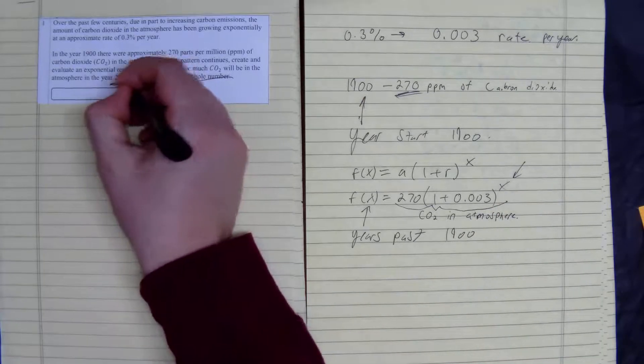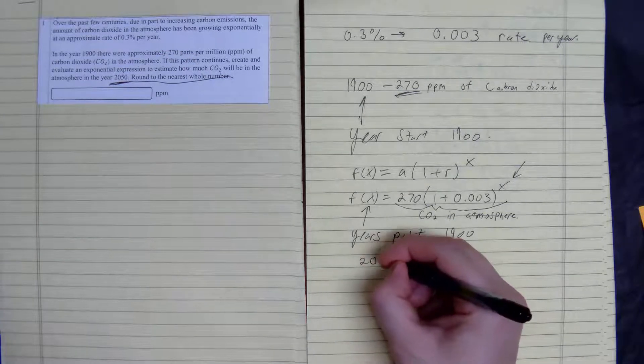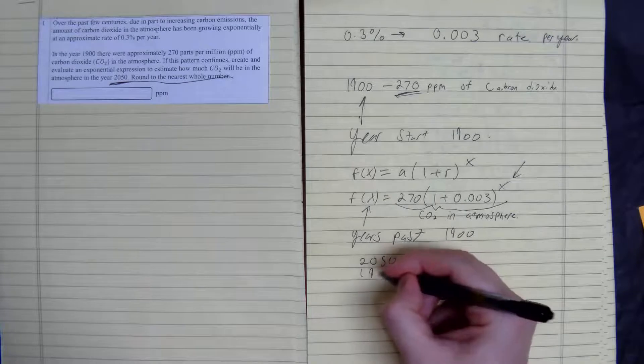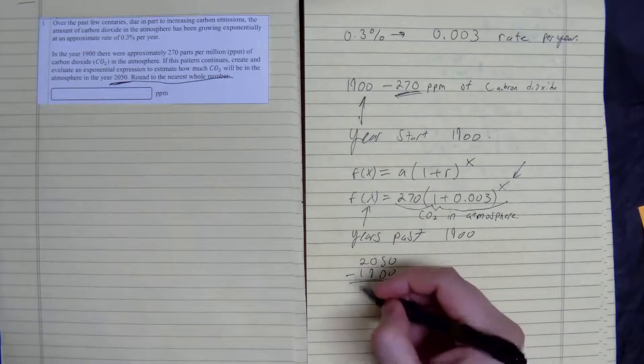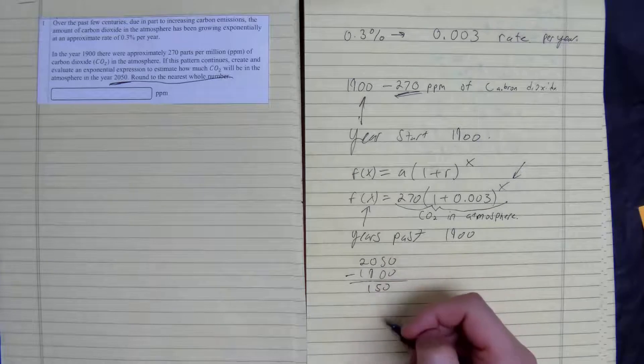So we want to figure out when it's 2050. We could just do 2050 take away 1900. That gives us 150. So our input is 150.